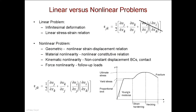For nonlinear finite elements, typically in a linear problem, the full Green-Lagrange strain tensor has six components that include the higher-order terms. But for the linear problem these higher-order terms are neglected, and this can be neglected when you have small displacements, small gradients, small rotations.